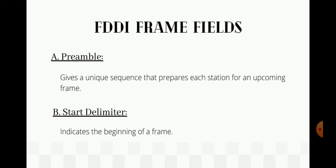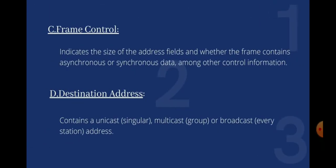The Preamble (PA) provides a unique sequence that prepares each station for an upcoming frame. The Start Delimiter (SD) marks the beginning of the frame. Frame Control (FC) indicates the size of the address fields and whether the frame contains synchronous or asynchronous data, among other control information. Destination Address (DA) contains a unicast, multicast, or broadcast address.